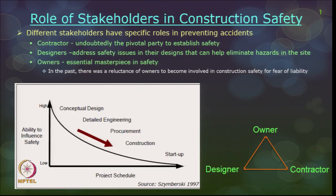Owners, in the past, were never involved in safety or in construction project execution — they kept themselves away because they thought they were not technically expert. But owners have a very big and dominant role when it comes to implementing construction safety. This graph shows the different stages in a project starting from conceptual design, detailed design, procurement, construction, and through to closeout and completion.